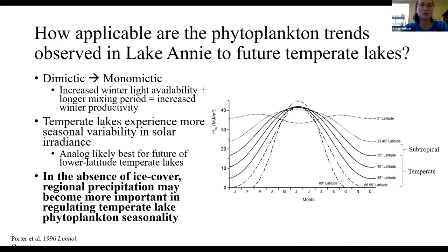Another overarching question was how applicable these phytoplankton trends from Lake Annie are to the future of temperate lakes. Many temperate lakes are dimictic, meaning they mix twice per year in the spring and fall, and due to climate change they may begin to transition to a monomictic regime, mixing just once per year in the winter — more similar to what we see in Lake Annie. This will lead to increased winter light availability and longer mixing periods, which could increase winter phytoplankton productivity. However, temperate lakes do experience more seasonal variability in solar radiance, so this analog using Lake Annie will likely work best for the future of lower-latitude temperate lakes. Overall, I believe that in the absence of ice cover, regional precipitation could become more important in regulating phytoplankton seasonality in temperate lakes.